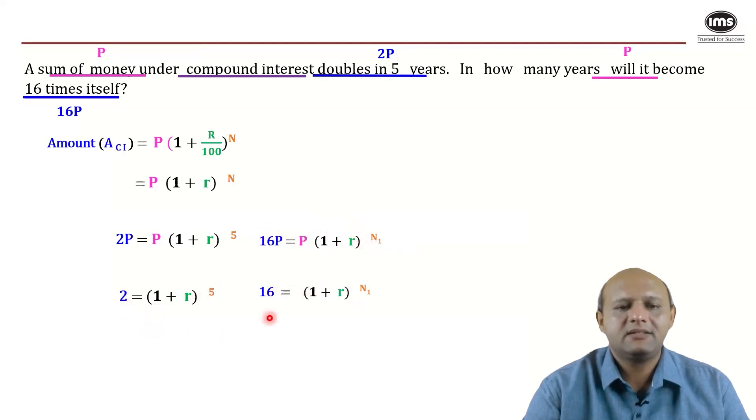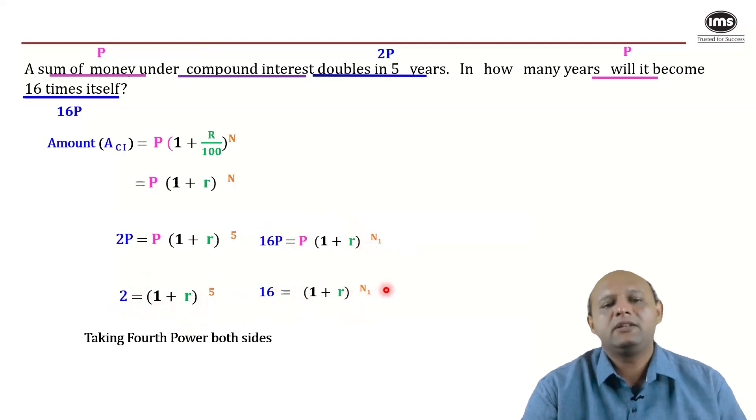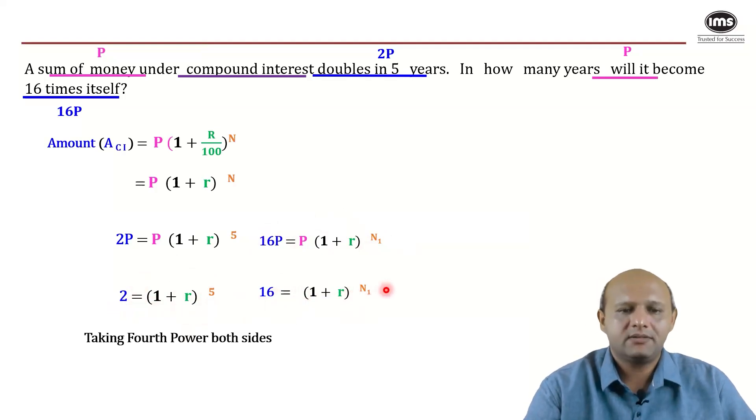What do you observe? If you raise this equation to the fourth power - and why? Because we want to express this (1 + r) in terms of a power through which we can find n1. If you take the fourth power on both sides, you'll realize that 2 raised to 4 is 16, and therefore (1 + r) raised to 5 whole raised to 4 would be (1 + r) raised to 20.